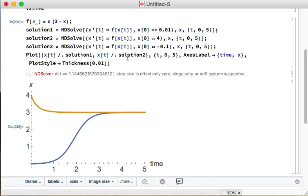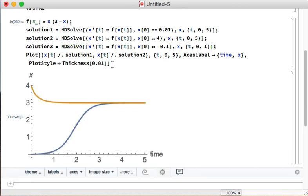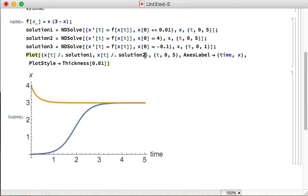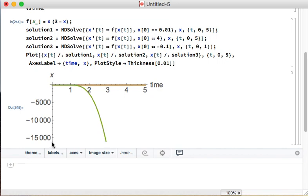And maybe I'll actually plot a case that starts below the axis. So negative 0.1. Actually, this thing is going to explode. This 0 is an unstable fixed point, and so anything that starts below it is exploding away to negative infinity. And so I wasn't able to keep integrating because it got too big. So I'm just going to integrate for one time unit there.